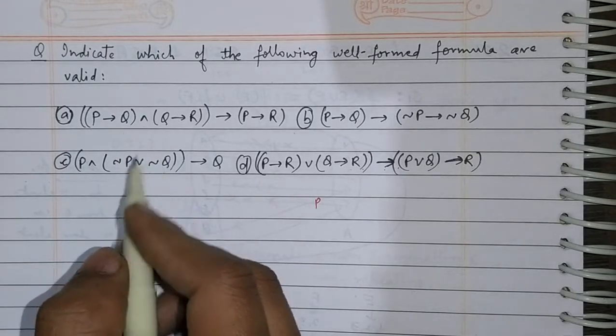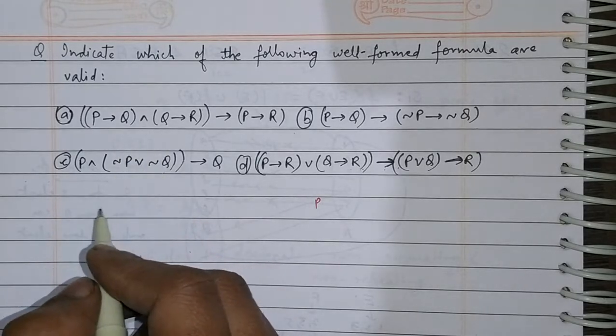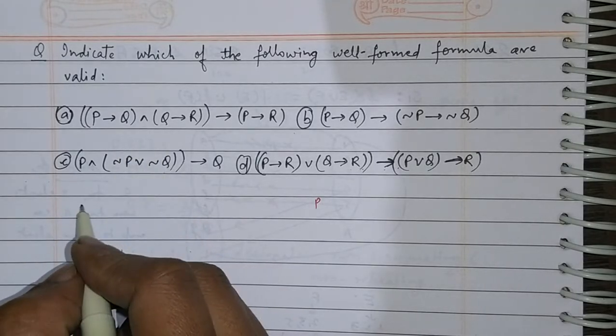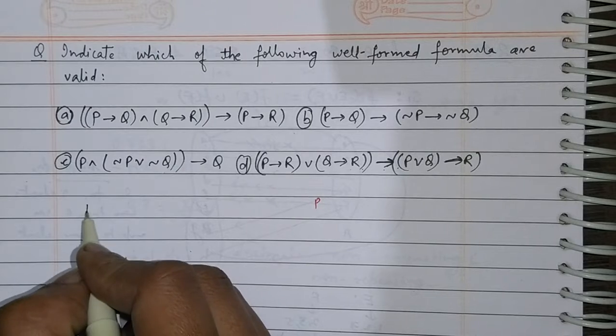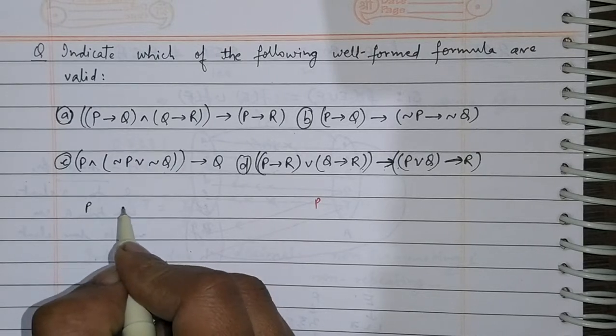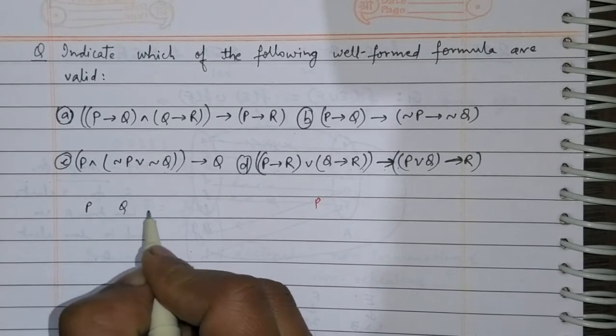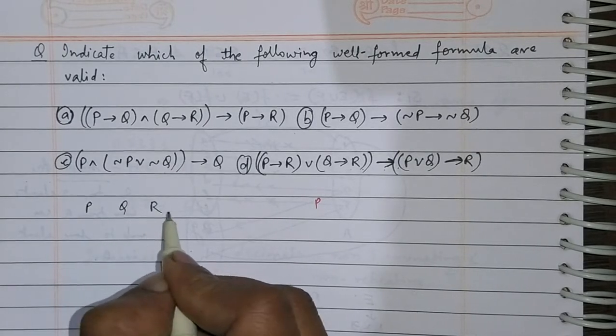We can use a truth table to find this equation. For example, we set up columns for P, Q, and R.